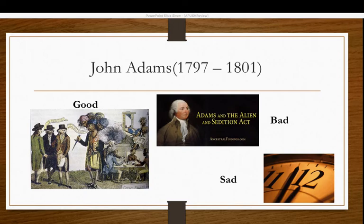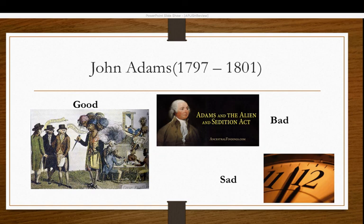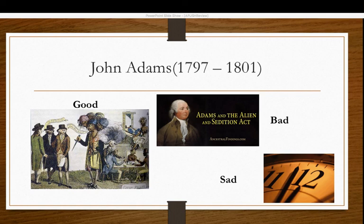The sad part of Adams' presidency was the appointment of midnight judges. Just before leaving office, Adams appointed numerous Federalist judges to benches all over the country. The purpose was to maintain Federalist influence as the country was clearly drifting toward the Jeffersonian Republicans. He appointed many to lifetime positions on the bench, and some were still waiting for their papers when he left — which would lead to a controversy with the Marshall Court under Thomas Jefferson, which we'll talk about in our next lecture.